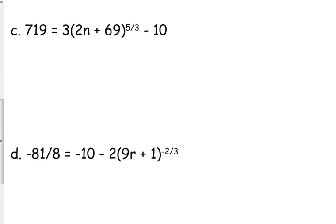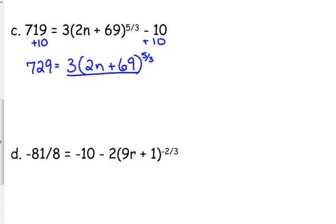Two more. Let's go to some really complicated ones. I have a lot of stuff going on, but we can handle it. Because we are math masters. So 719 is equal to 3 times 2n plus 69 to the 5 thirds minus 10. Anytime you're solving an equation, your first step should be adding and subtracting. You do the order of operations in reverse. So adding and subtracting is the last thing you do when you're simplifying something, so it's the first thing you do when you're solving. So we want to add 10 to both sides. So we get 729 is equal to 3 times 2n plus 69 to the 5 thirds. Then we divide by 3.